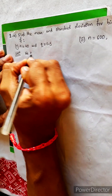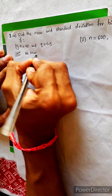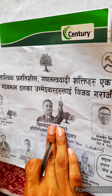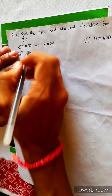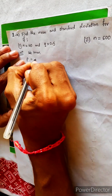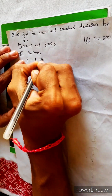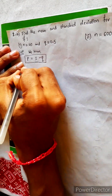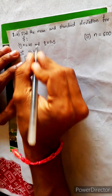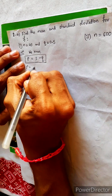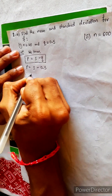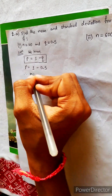We know one universal formula. P equals to 1 minus Q. Because P is not given, we have to find P. So P equals to 1 minus 0.5, therefore P equals to 0.5.